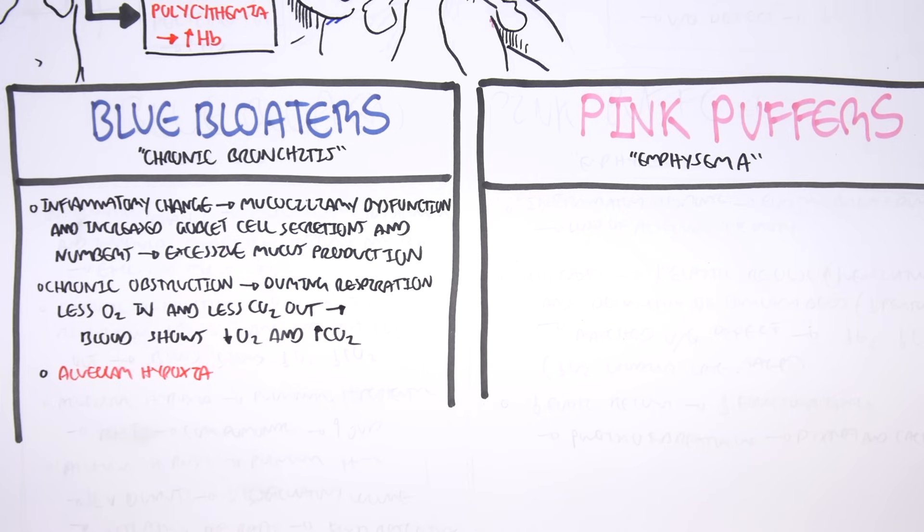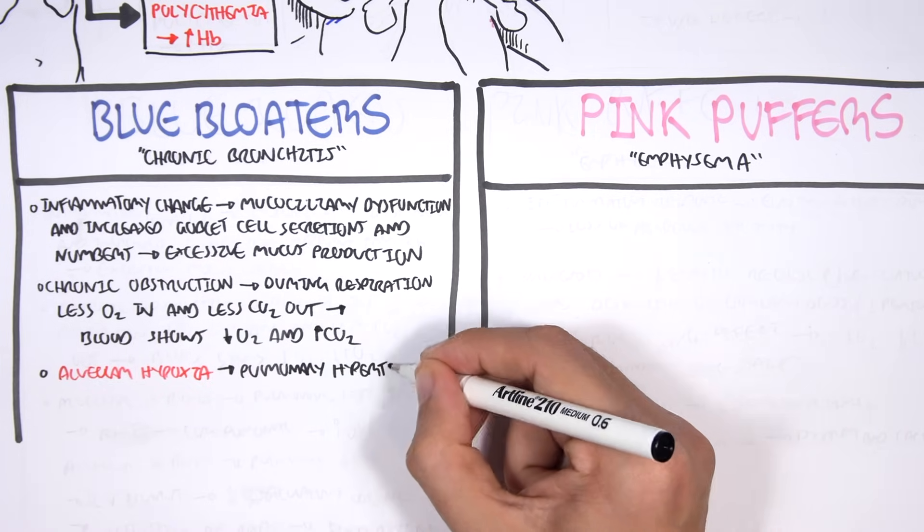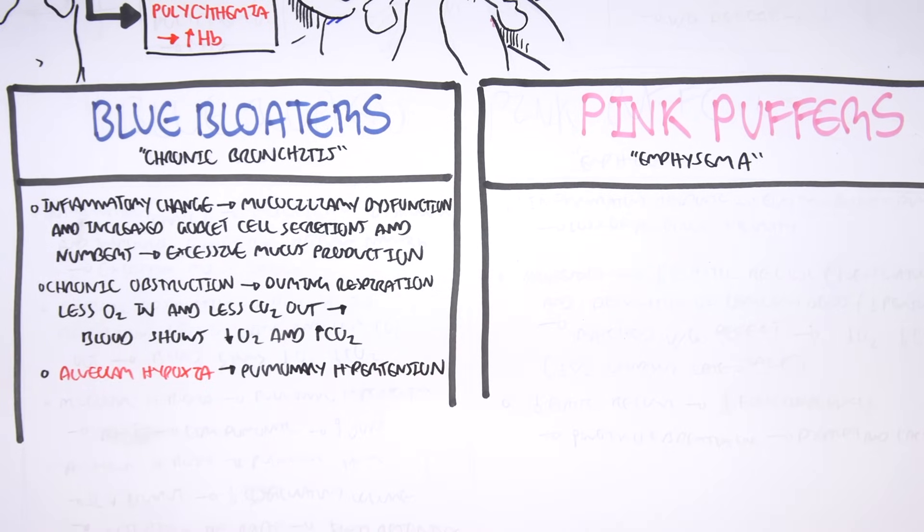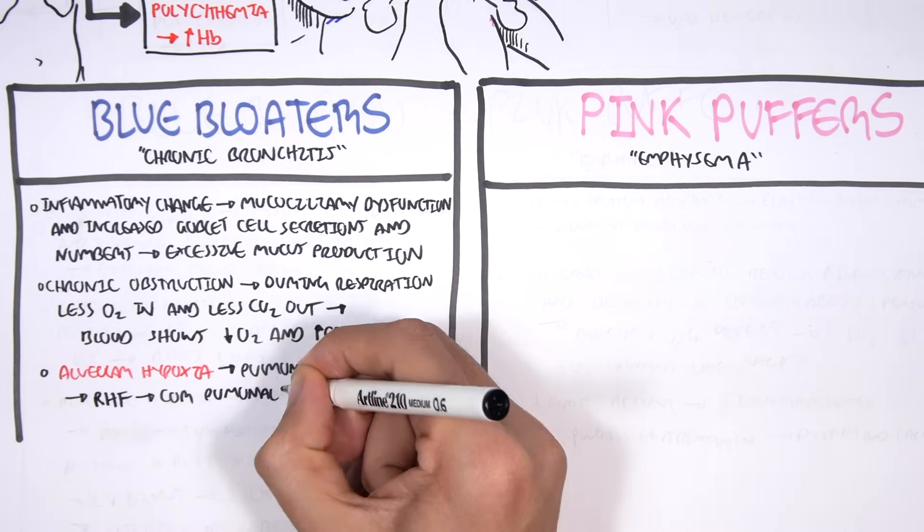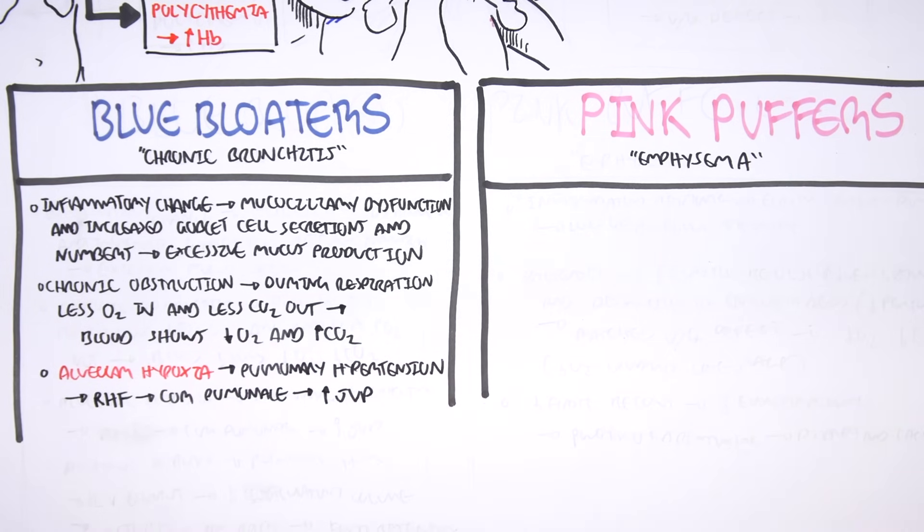When you get pulmonary hypertension, this can cause backflow of blood to the right side of the heart, and this can cause right-sided heart failure, which causes cor pulmonale, leading to the increase in jugular venous pressure.